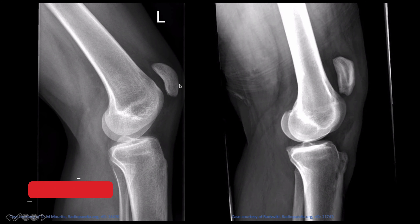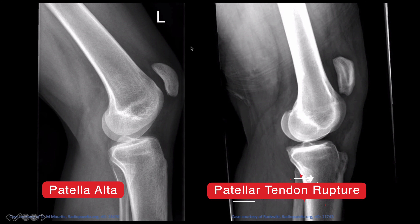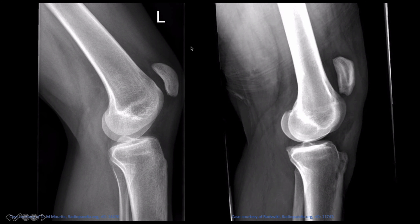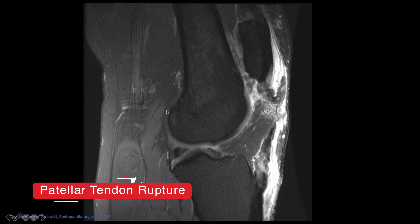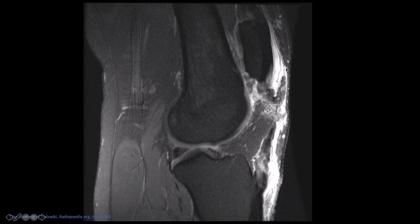These are two cases - one for patella alta on the left, and the other is patella tendon rupture. It can be difficult to differentiate between the two, but in this case there's soft tissue swelling in front of the patella suggesting traumatic origin, and some irregularity where the patella tendon should be. Comparing Hoffa's fat pad there's a little more fluid than expected. On MRI, you can see significant soft tissue swelling, disruption of the fibres of the patella tendon, and fluid all around the area.